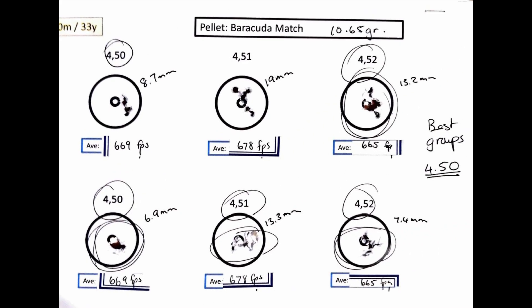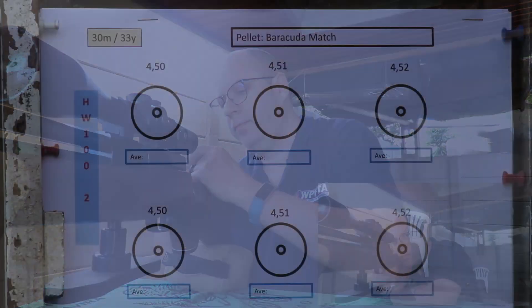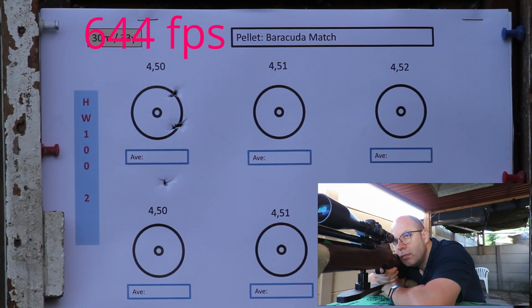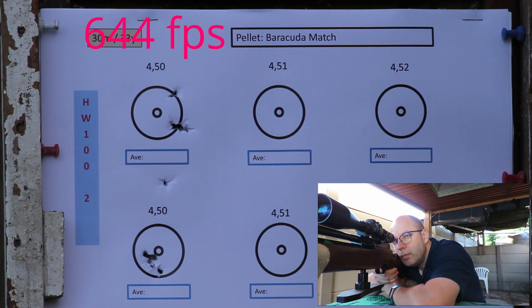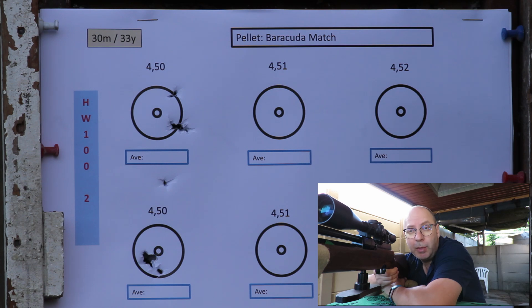All right, time for HW number two. We're starting off again with the Barracuda matches in 4.50. Important to note, I cleaned the barrel early this morning, so that first seven shots was just basically leading the barrel again. You can see it was all over the place—first one very low and then all over the place. They're shooting slightly to the right, so I had to compensate on the bottom target to get it as close to the zero as possible, and a much better grouping.